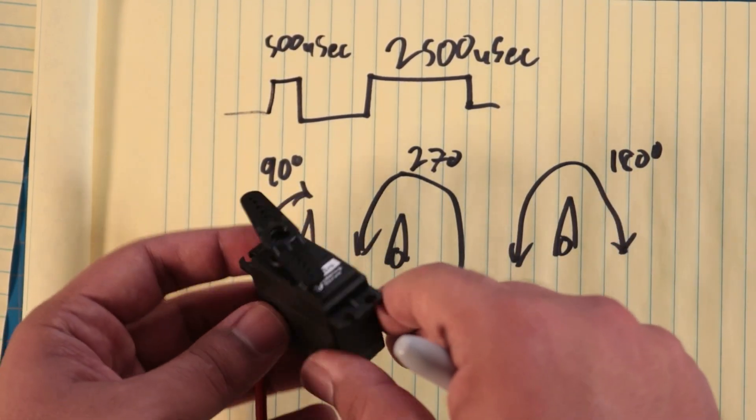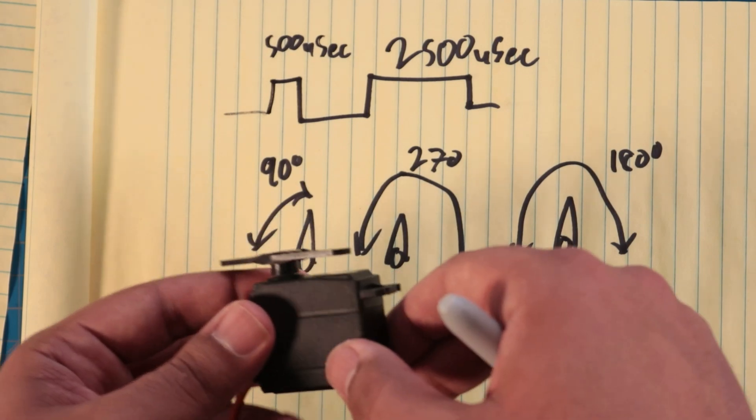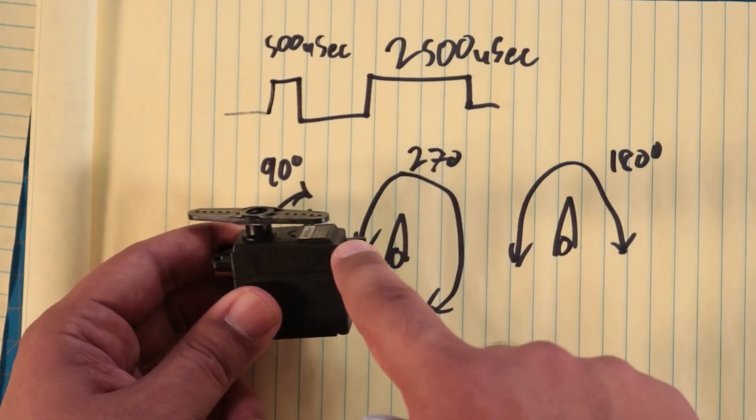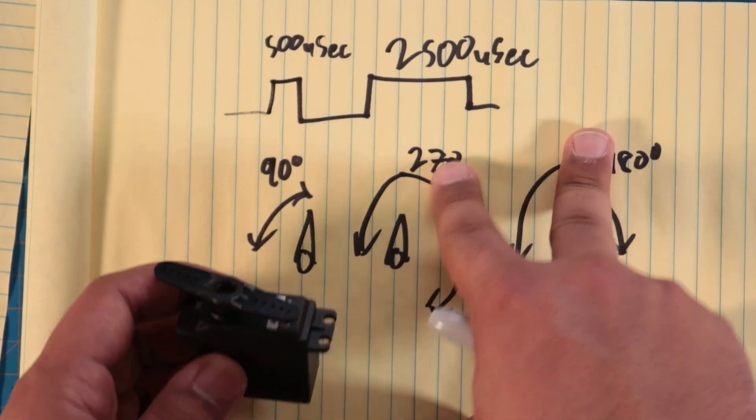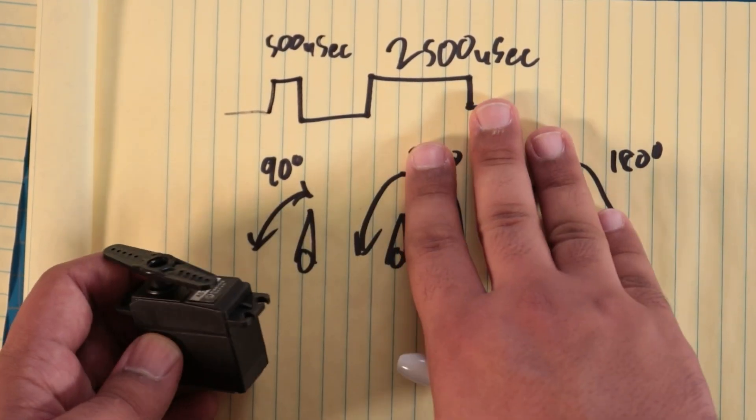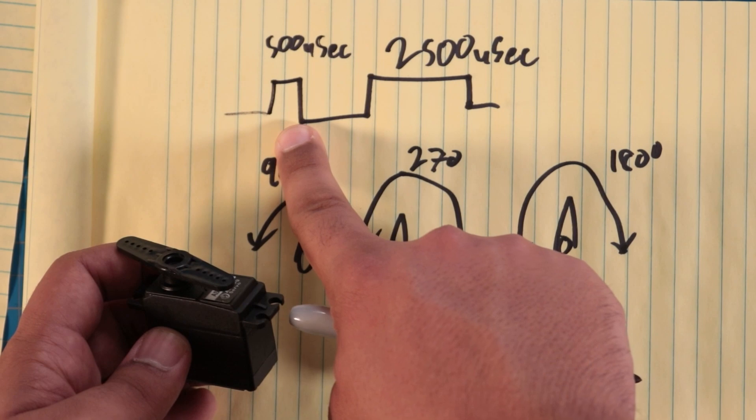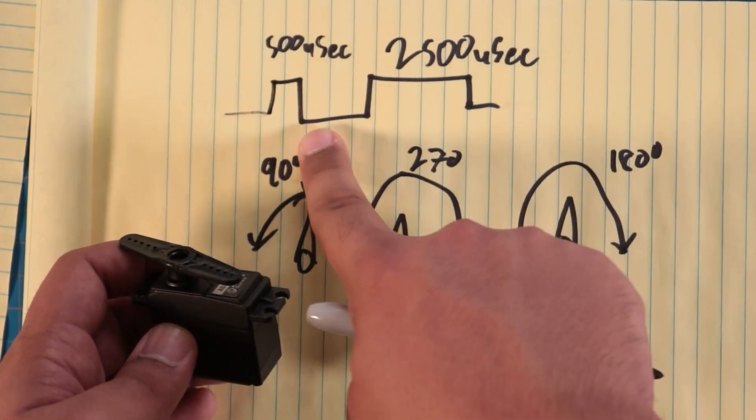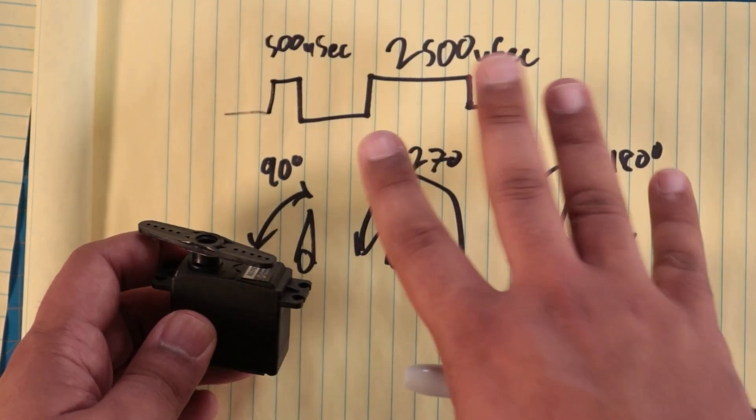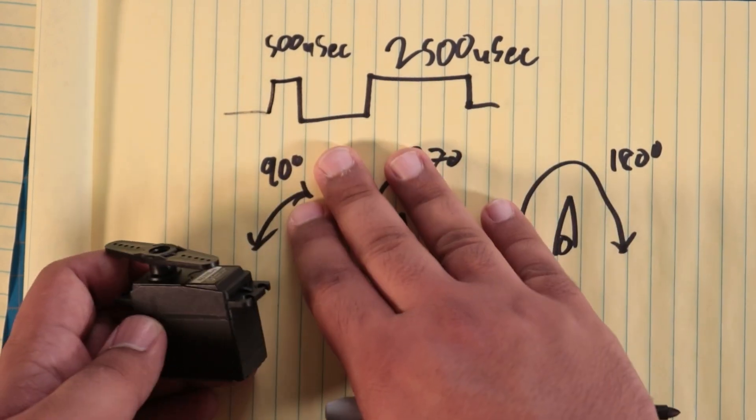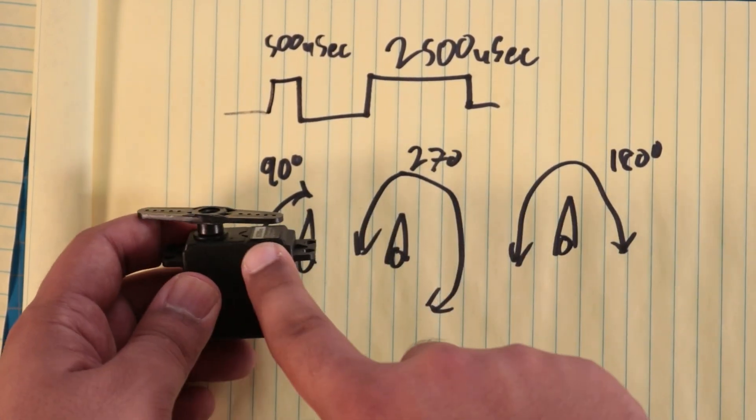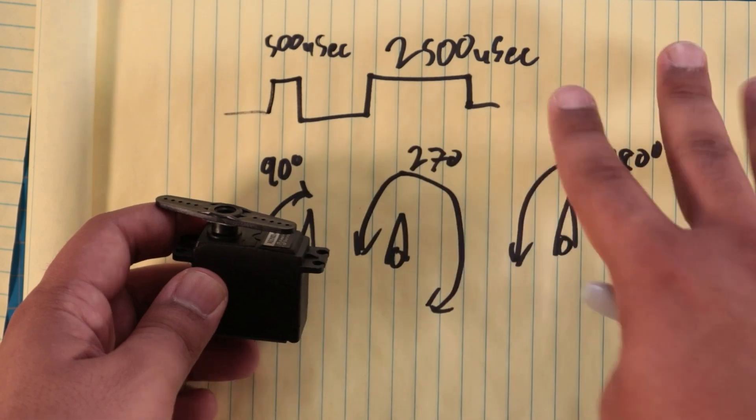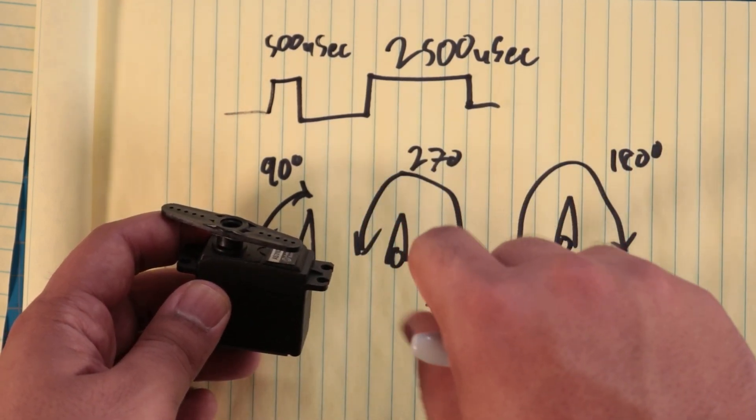By varying the pulse width, we can change how far along that servo can move. Now, all of the cheap servos mention specifications that are nice, perfect degree increments. The reality is that's not what you get. You get what you pay for, and if you paid $5 for a servo, you're getting $5 worth of value, maybe even less, maybe more.